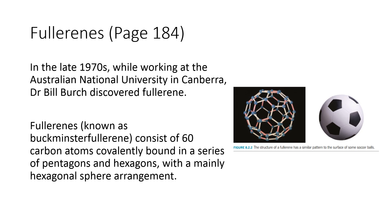The first example of the nanomaterials that is also a carbon allotrope is fullerene. There is a scientist who basically discovered fullerene — his name is Dr. Bill Birch. In the late 1970s, what fullerene is known as is the Buckminster fullerene structure. It consists of 60 carbon atoms that are commonly bound in pentagon and hexagon structures in a sphere arrangement.